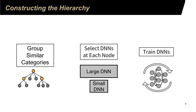The third step is to train the neural networks. Now we have multiple neural networks, and we will train them from the top root node gradually towards the leaf nodes. These are the three major steps.